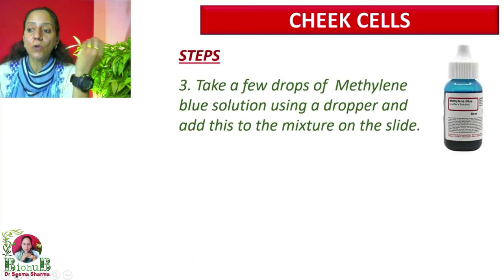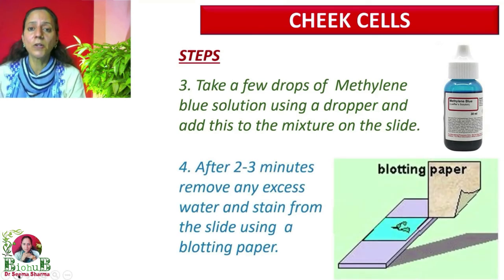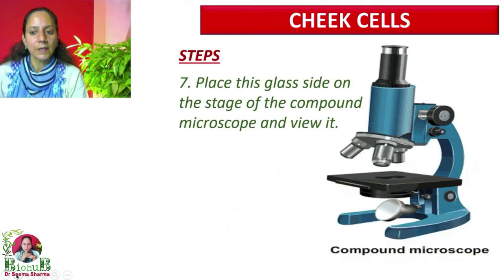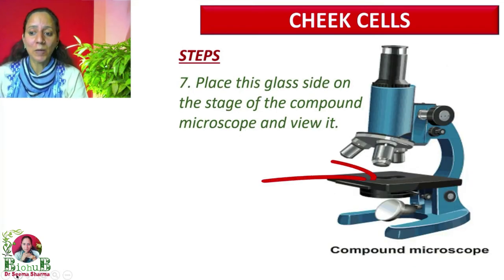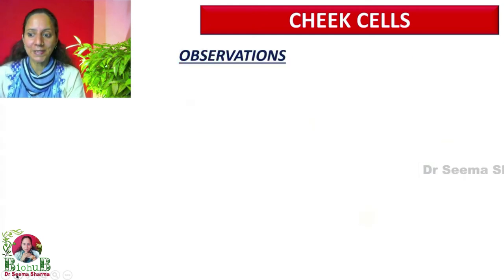Step three — add a few drops of methylene blue solution using a dropper. Place a cover slip very gently, and use blotting paper to remove excess dye or stain. Next step — place this glass slide on the stage of the compound microscope and view it in the same way as in the case of the onion peel cells.